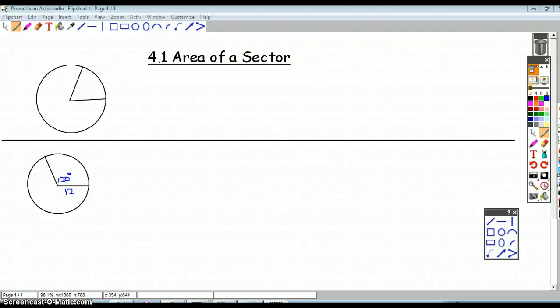In the last video we looked at arc length, and here we're going to look at the area of the sector. Just as a reminder, this is called the central angle, which we denote with the symbol theta. That's our radius. Now a sector is this piece of pie-shaped region.